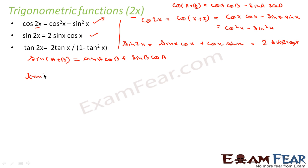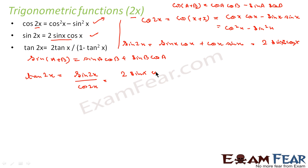Now we have to prove tan 2x. We know that tan 2x is nothing but sin of 2x divided by cos of 2x. So sin of 2x, as we have proved, is 2 sin x cos x. This becomes 2 sin x cos x over cos squared x minus sin squared x. Now we have to form something in the tan form because we are expanding tan 2x, so this should also be in tan form.